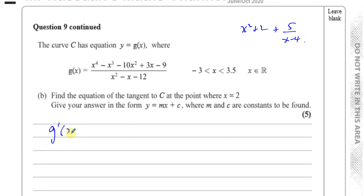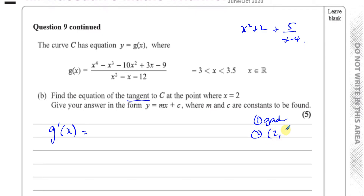We've got to find g dash of x — that tells us the gradient of the curve. To find the equation of a tangent, we need two things: one, the gradient, and two, a point — the coordinates of the point where x equals 2. So first, let's find the gradient.